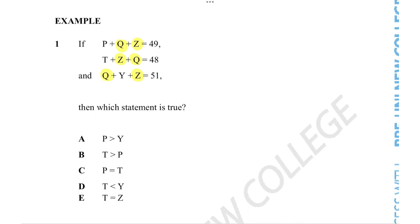If we say that Q plus Z is equal to some random number box, we don't know what it is, so we're just going to represent it with just a box. Let me rewrite these equations with the box instead of the letters Q and Z. We see P plus box is equal to 49, T plus box is equal to 48, and Y plus box is equal to 51.